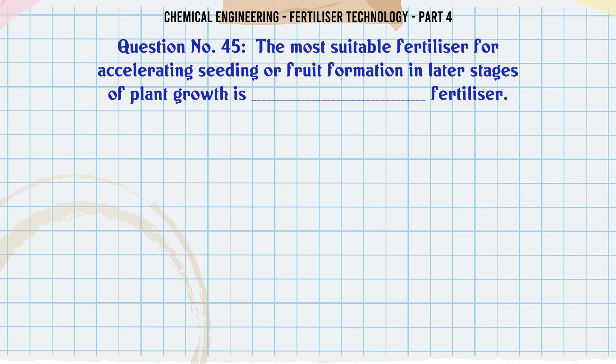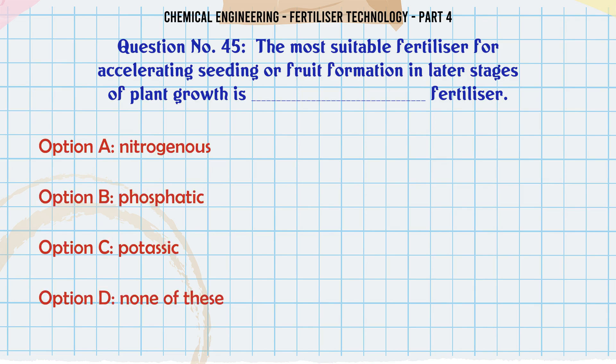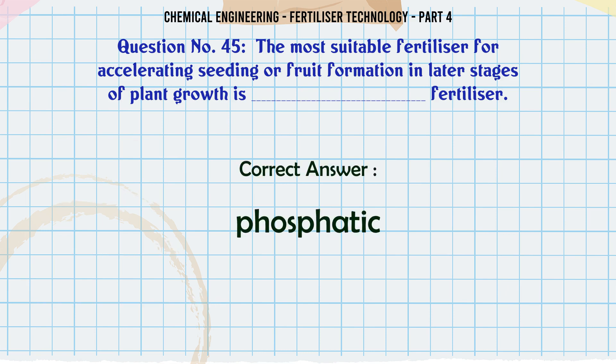The most suitable fertilizer for accelerating seeding or fruit formation in later stages of plant growth is __ fertilizer: a. nitrogenous, b. phosphatic, c. potassic, d. none of these. The correct answer is: phosphatic.